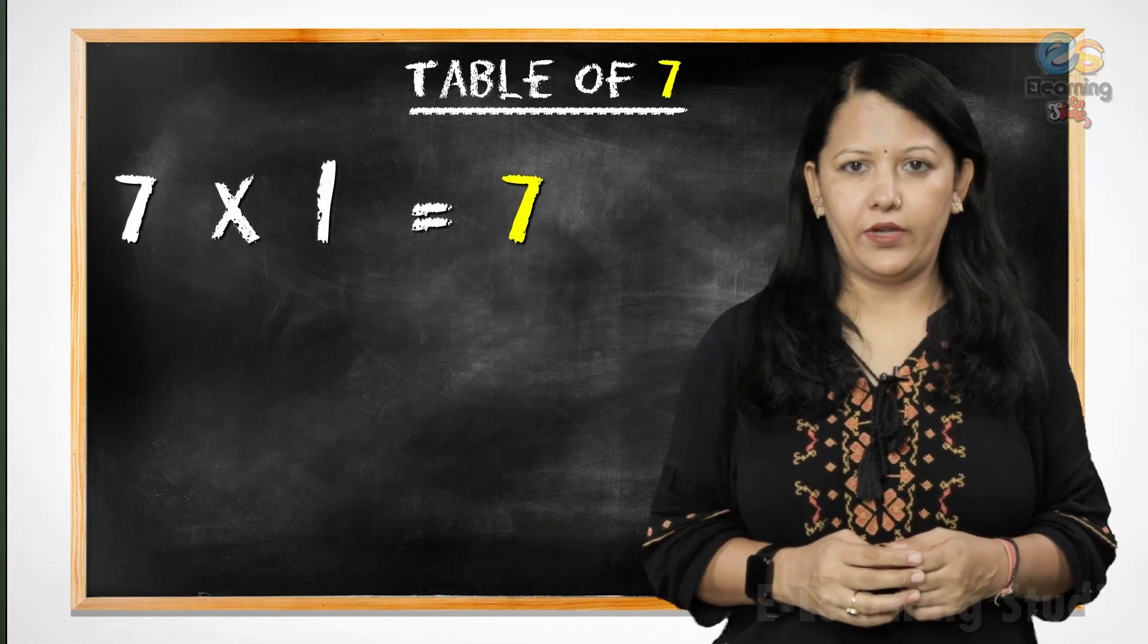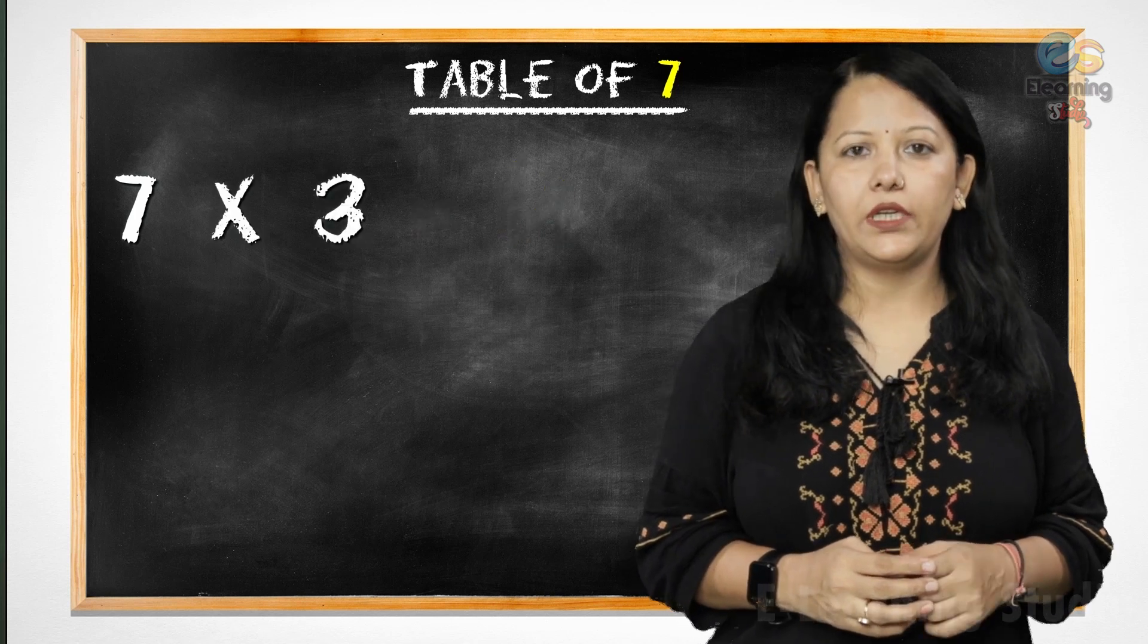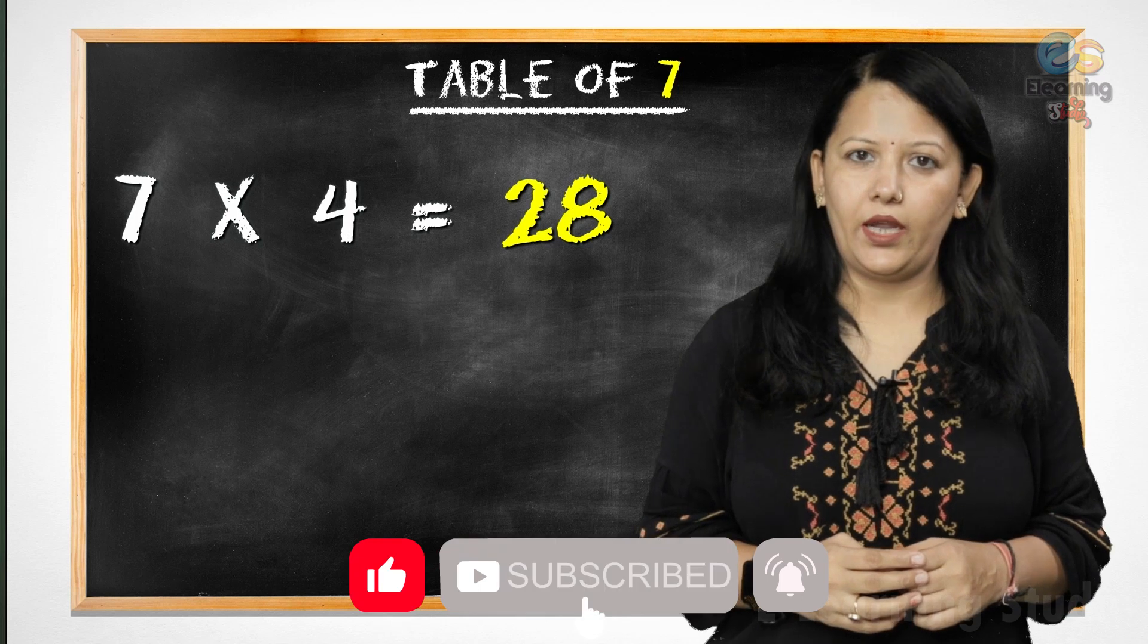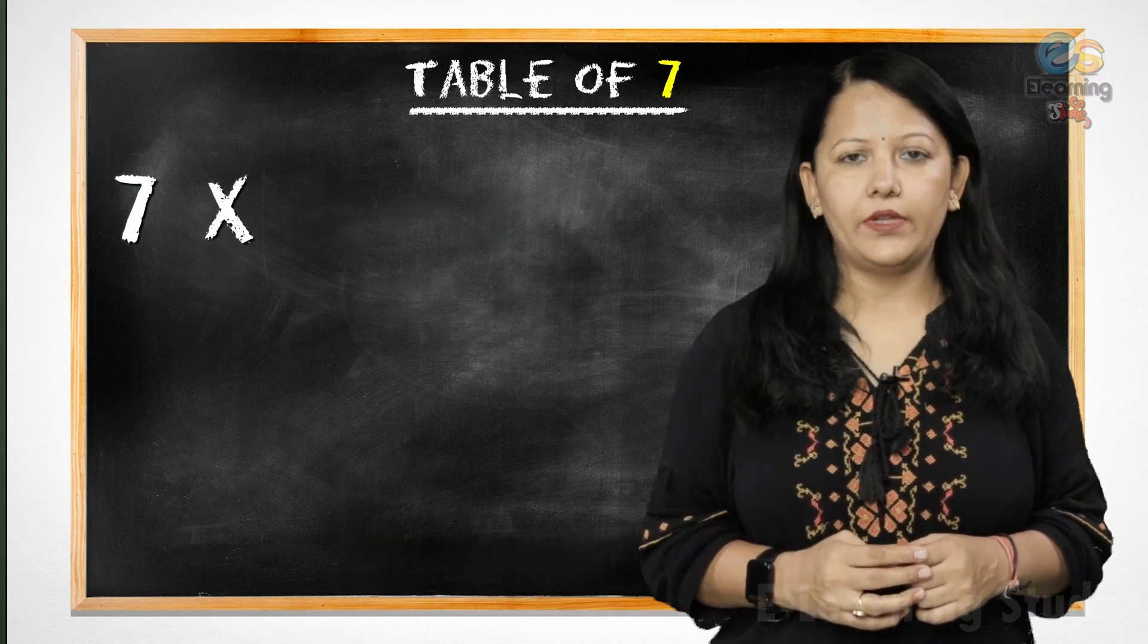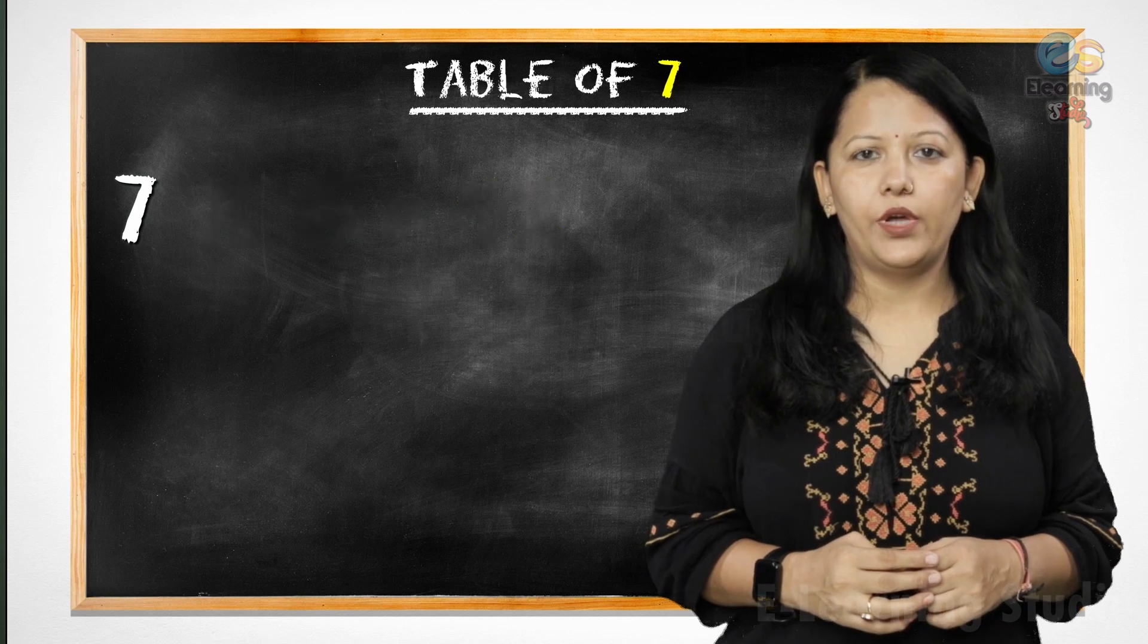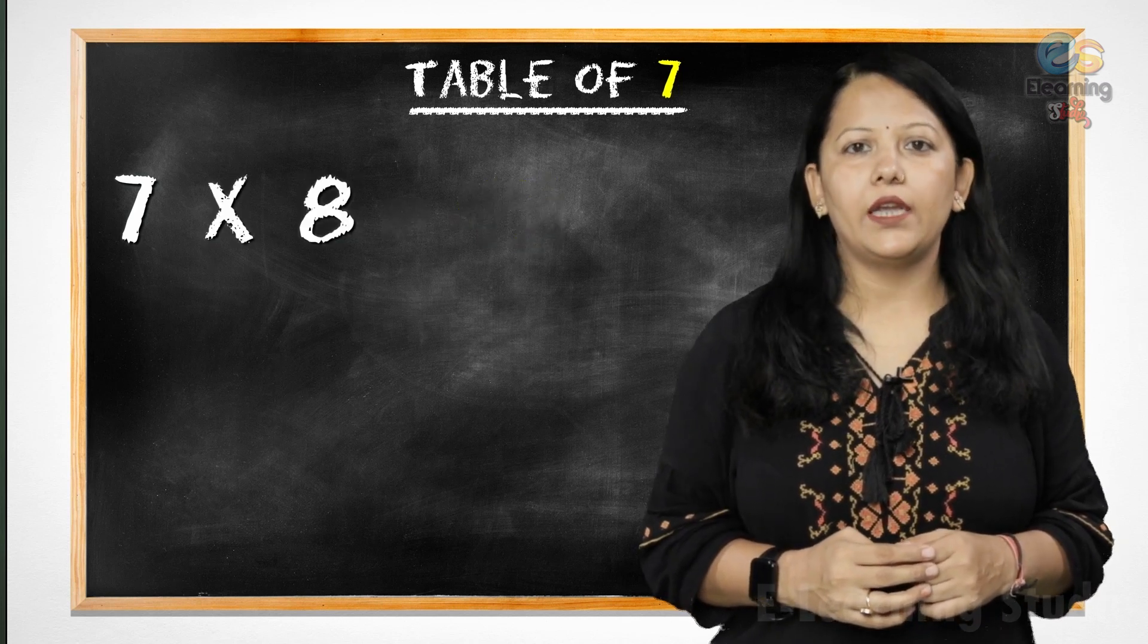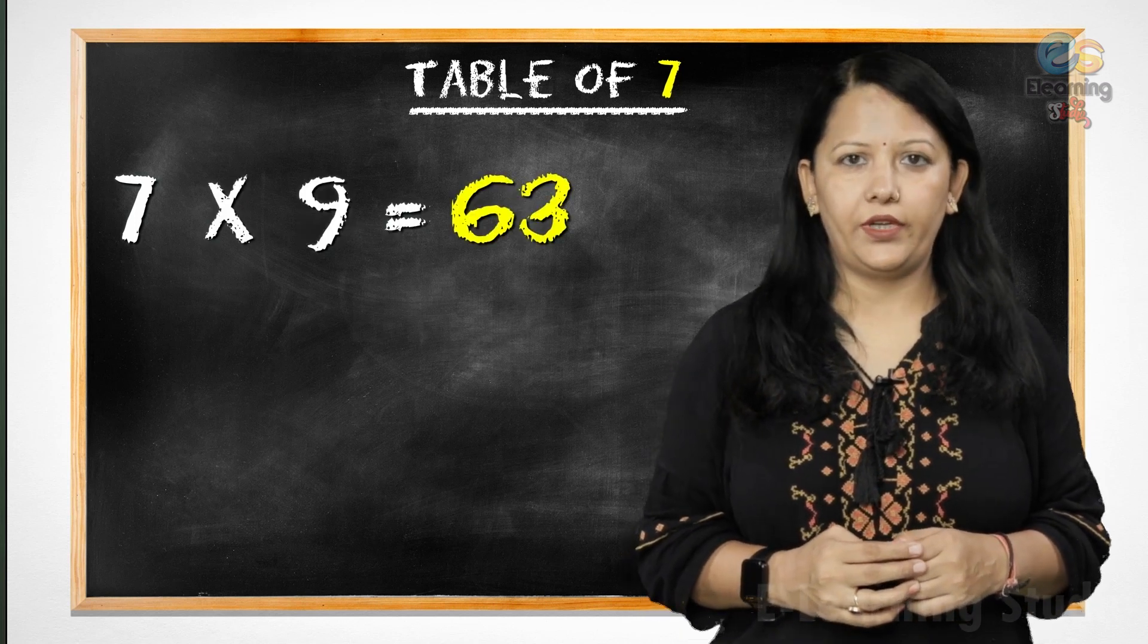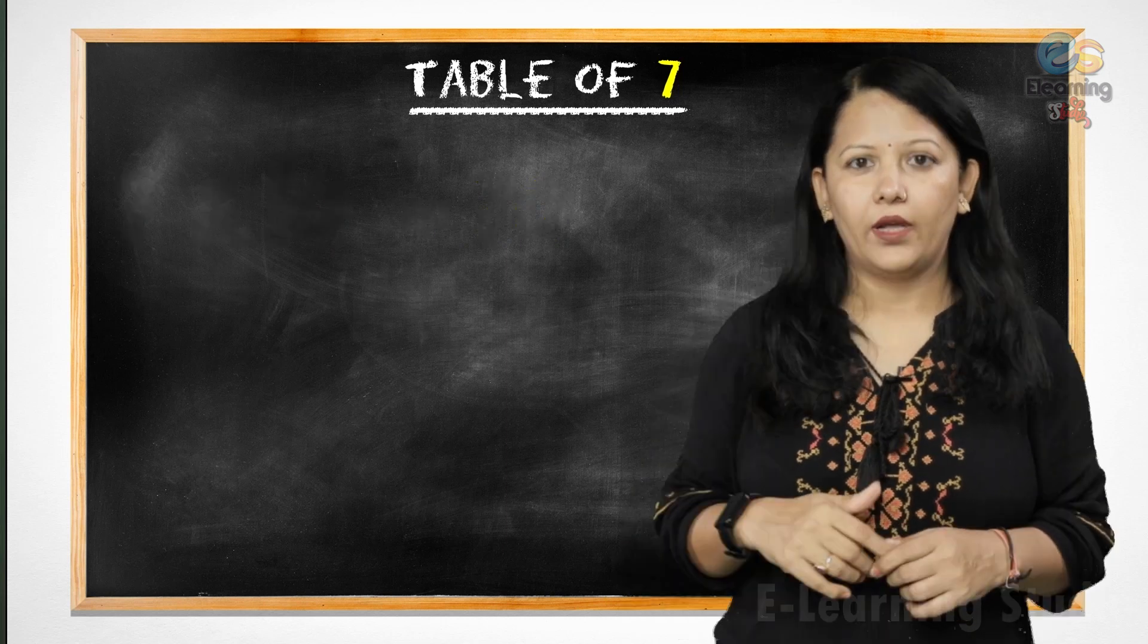7 ones are 7, 7 twos are 14, 7 threes are 21, 7 fours are 28, 7 fives are 35, 7 sixes are 42, 7 sevens are 49, 7 eights are 56, 7 nines are 63, 7 tens are 70.